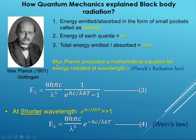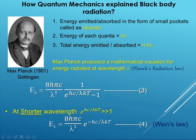Max Planck proposed a mathematical equation for energy radiated at wavelength lambda — Planck's Radiation Law. The equation is: E_lambda equal to 8πhc divided by lambda to the power 5 into 1 divided by (exponential hc divided by lambda kT minus 1). This can be called equation number 3.